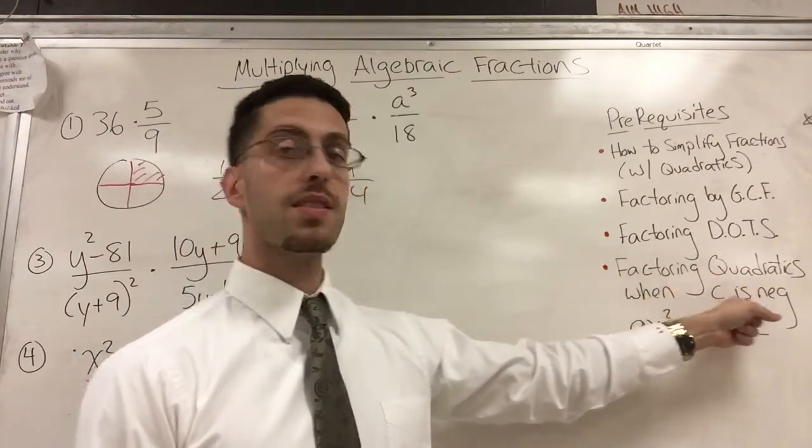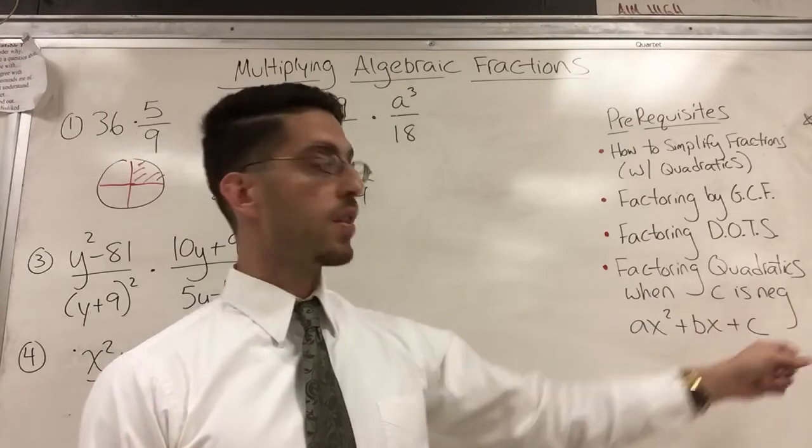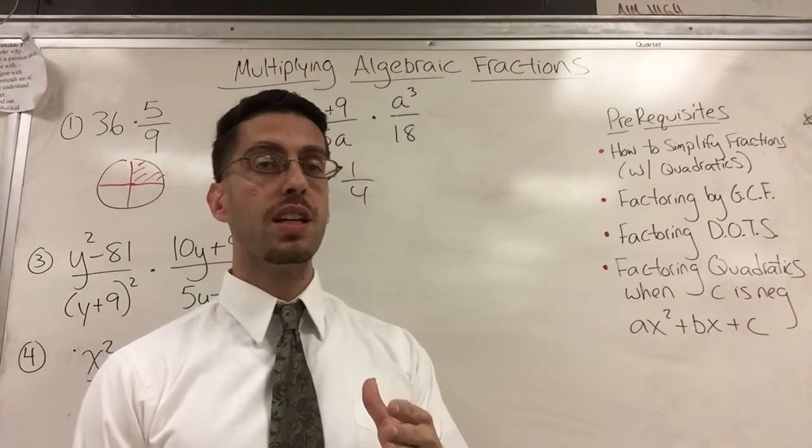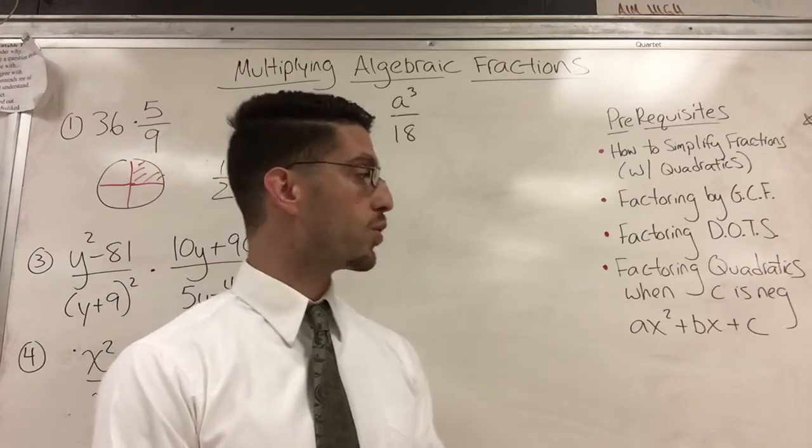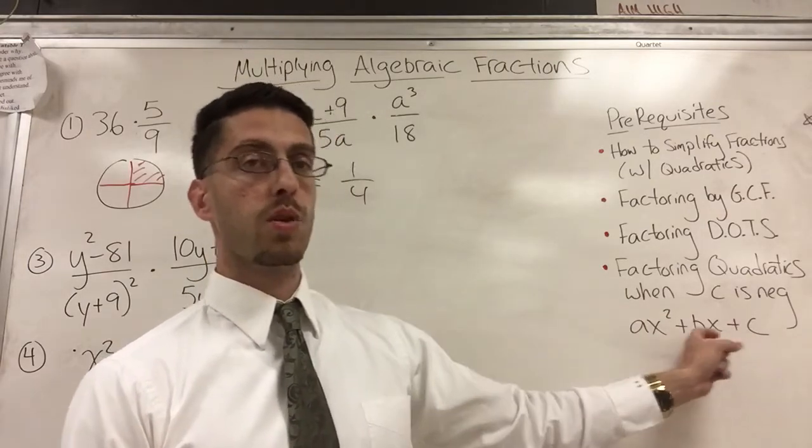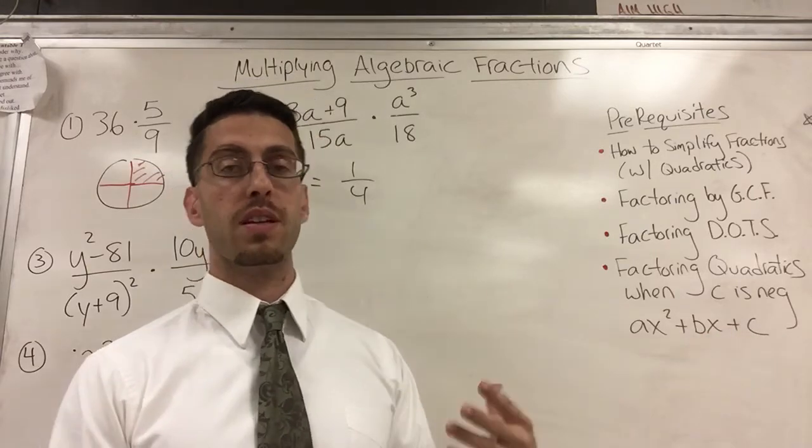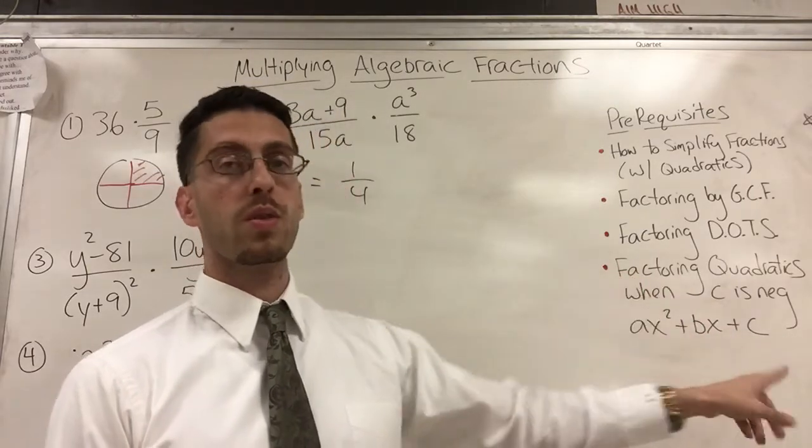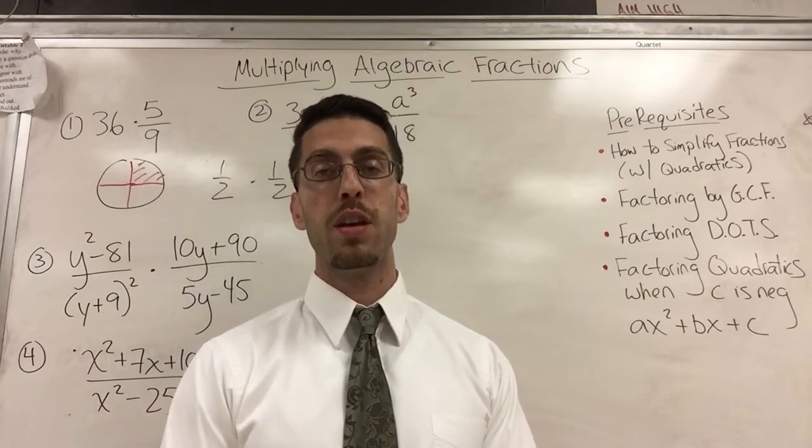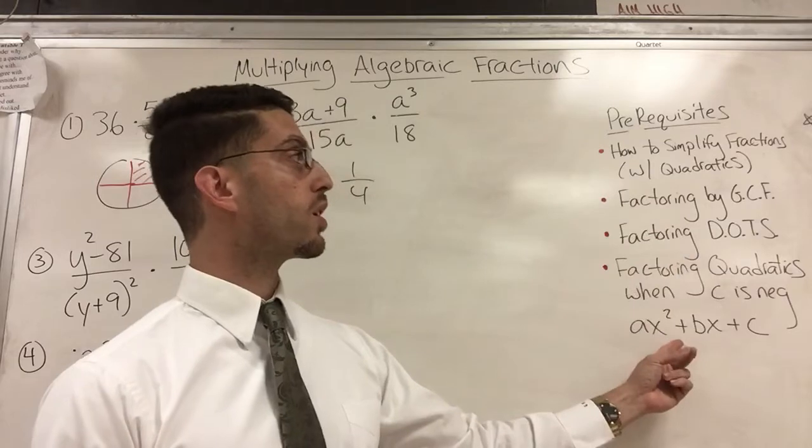Factoring quadratics when C is negative, that's another video. This is a quadratic, AX squared plus BX plus C. You should have seen it somewhere in your mathematical career. You've seen it when they're both positive here, two positive signs, two negative signs, one plus, one minus. So it gets mixed up, but I only did one video when C is negative, but the concept is the same. I call it the sum product method. So be comfortable with those three videos.